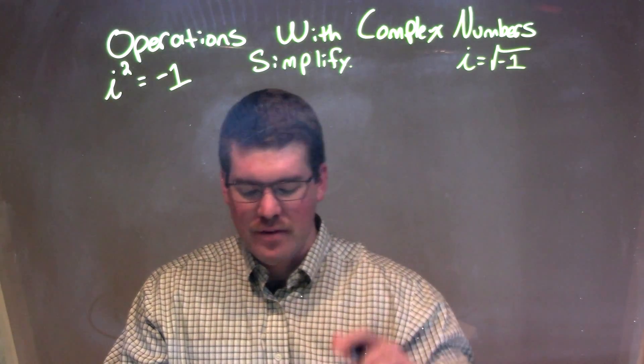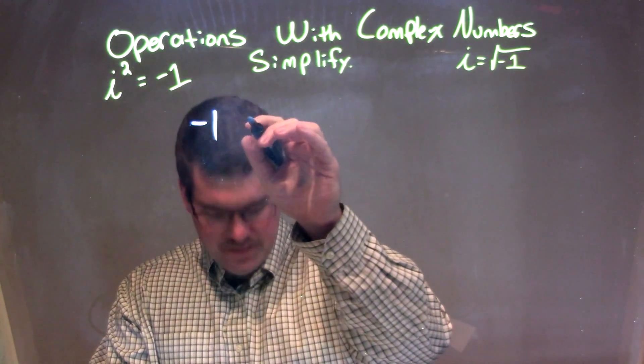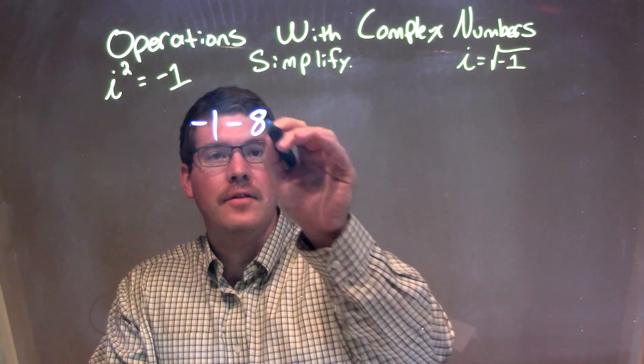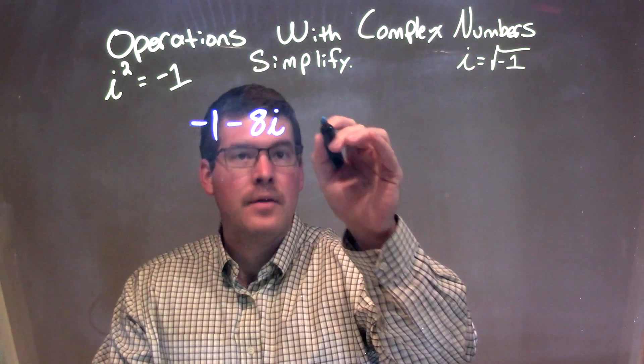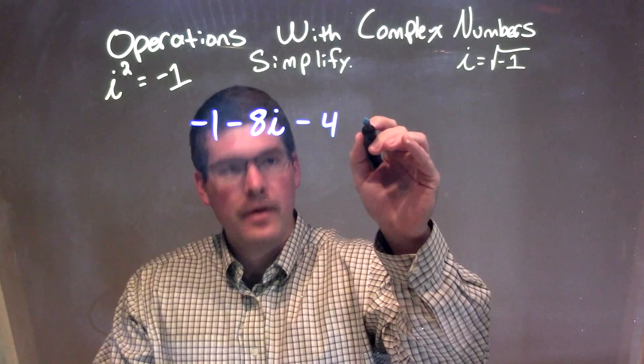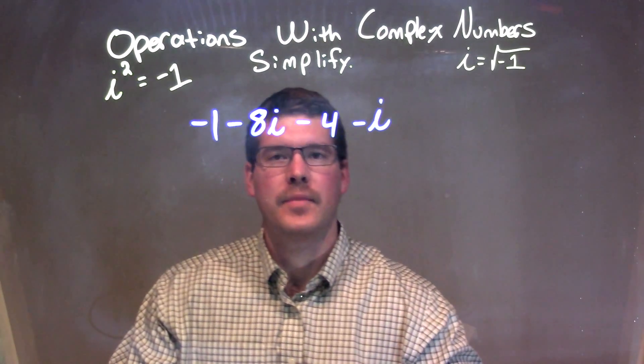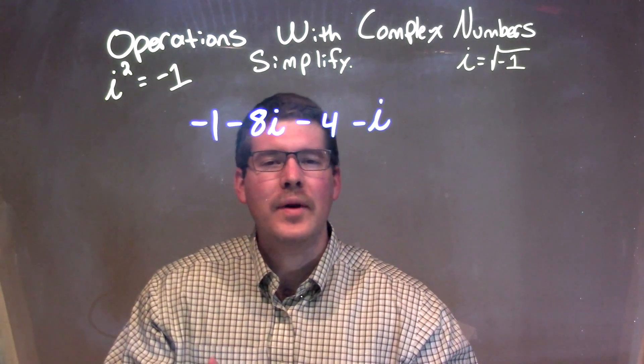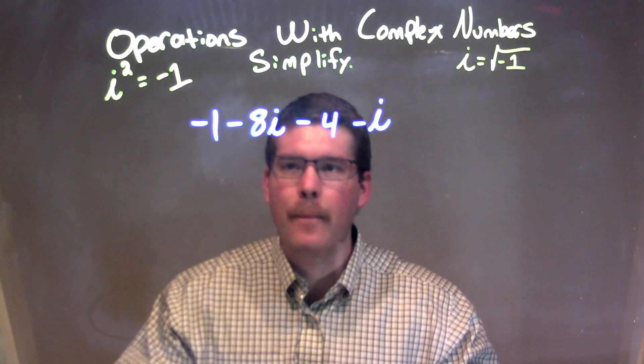If I was given this: negative 1 minus 8i minus 4 minus i. What we want to do is combine our like numbers.